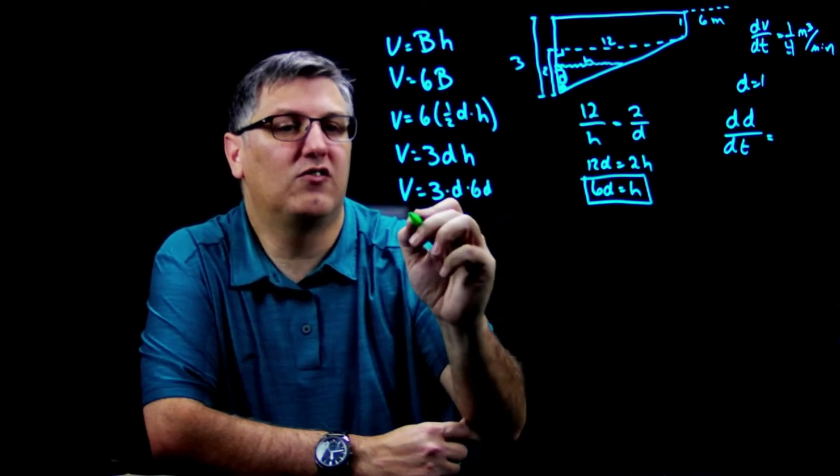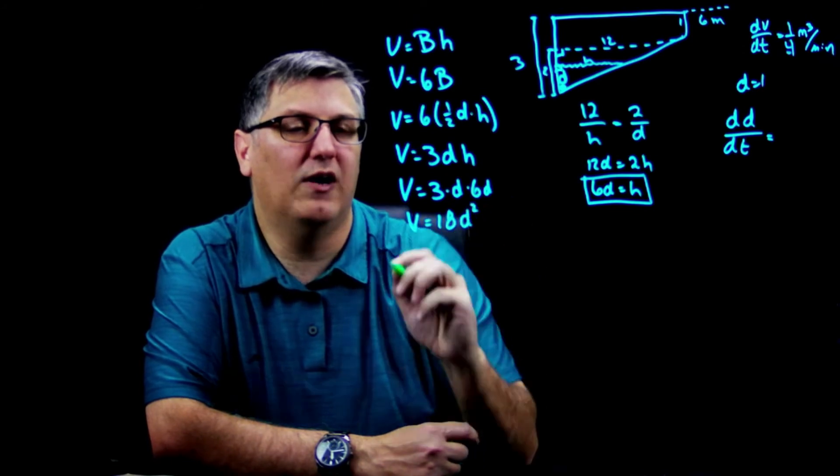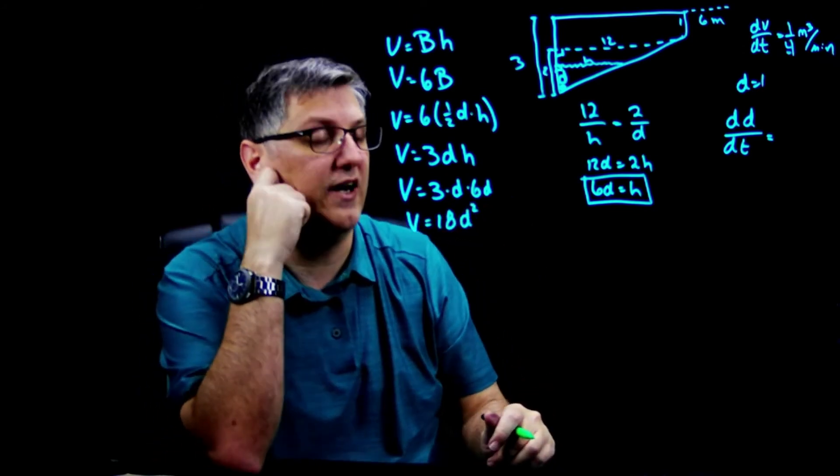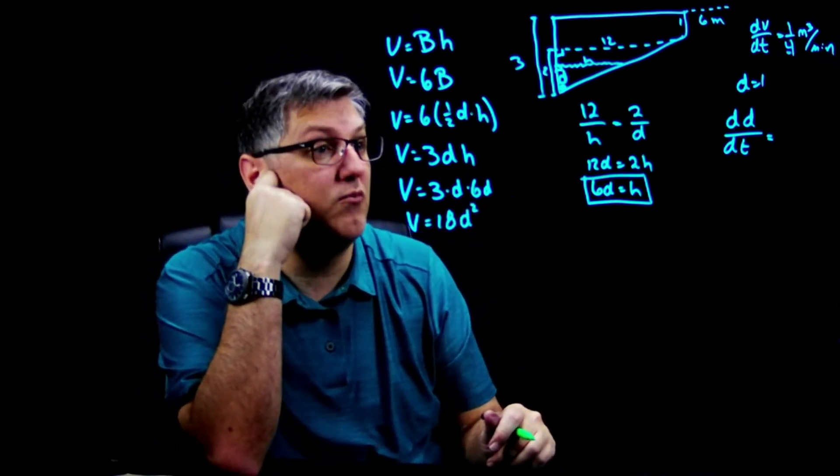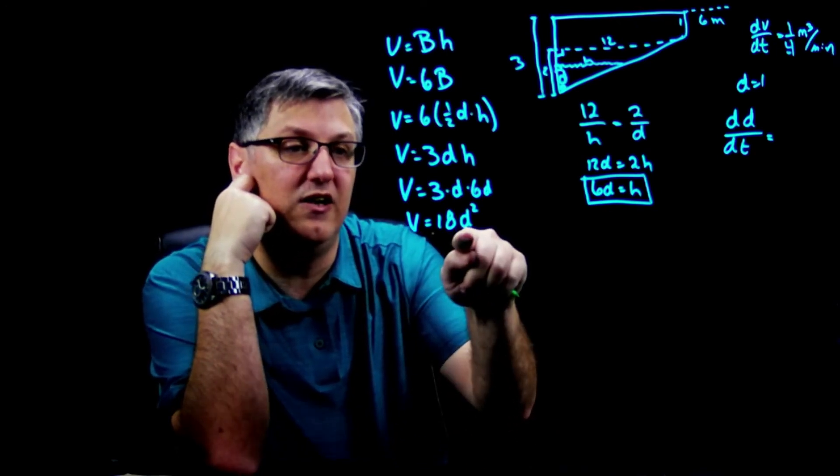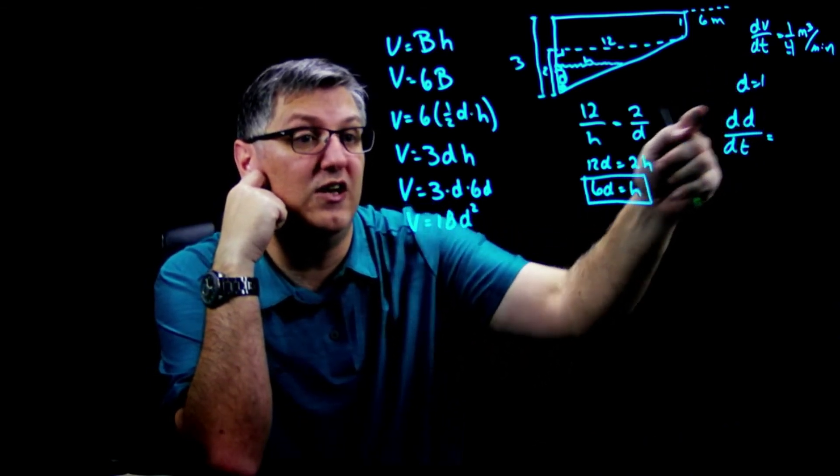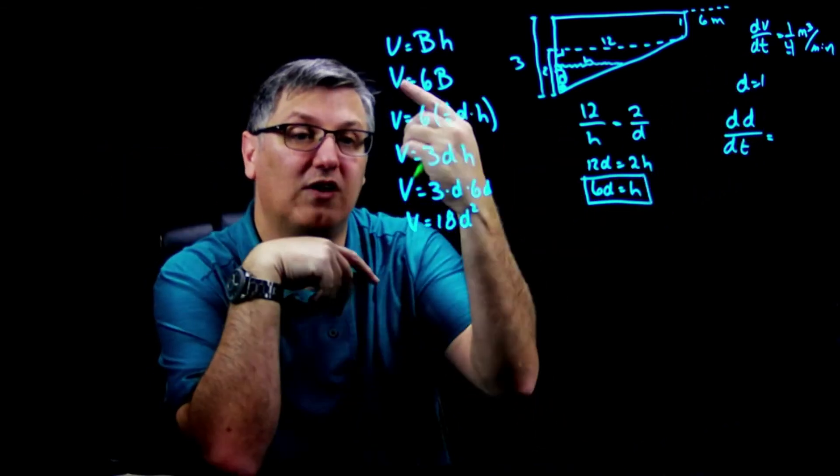Clean this up, I get V = 18d². Now I'm cooking, because I know when I take a derivative I got a dV/dt, and I get a dV/dt when I take my derivative - I have a dV and I have a d, so I should be okay. Let's take the derivative of both sides.